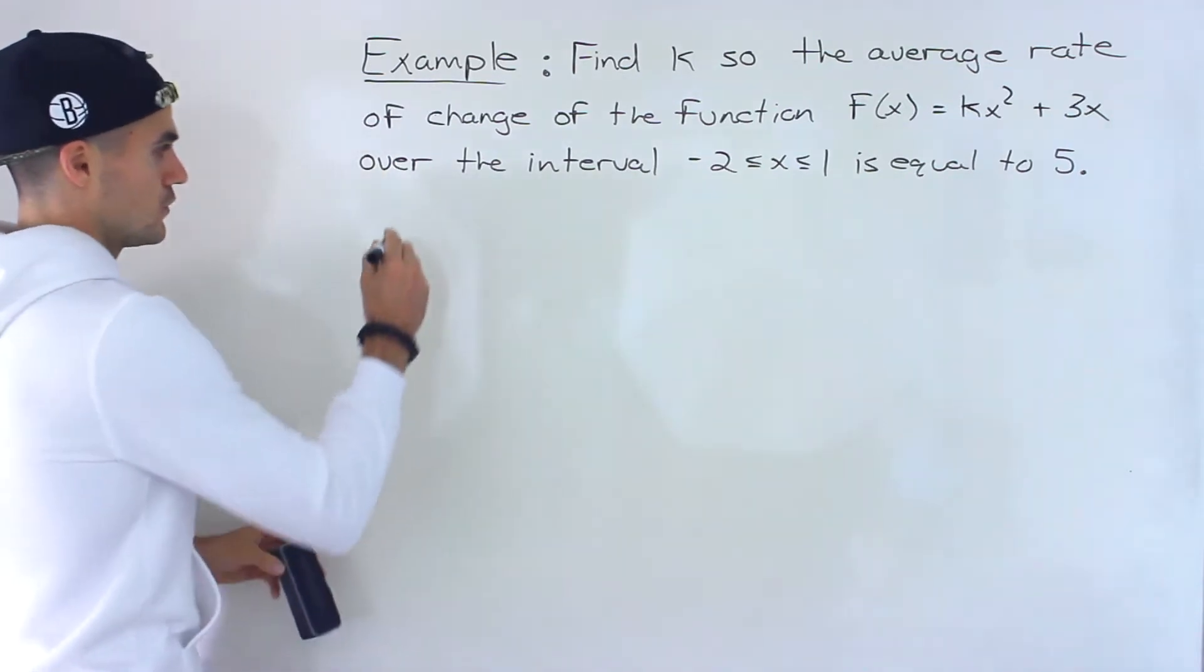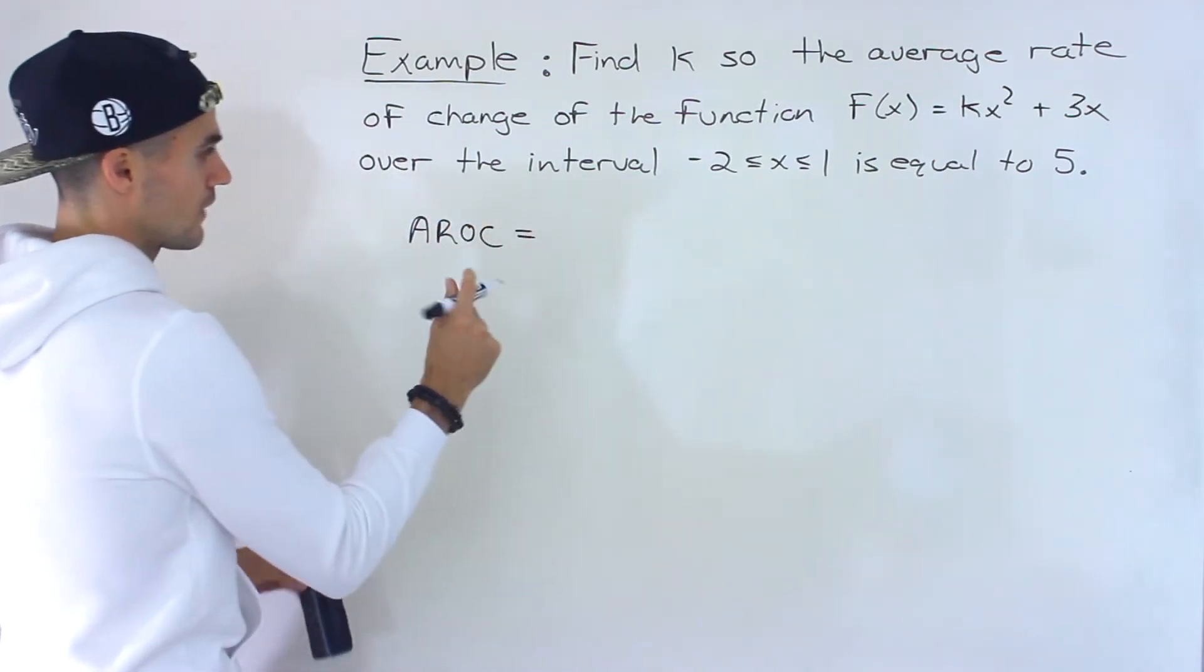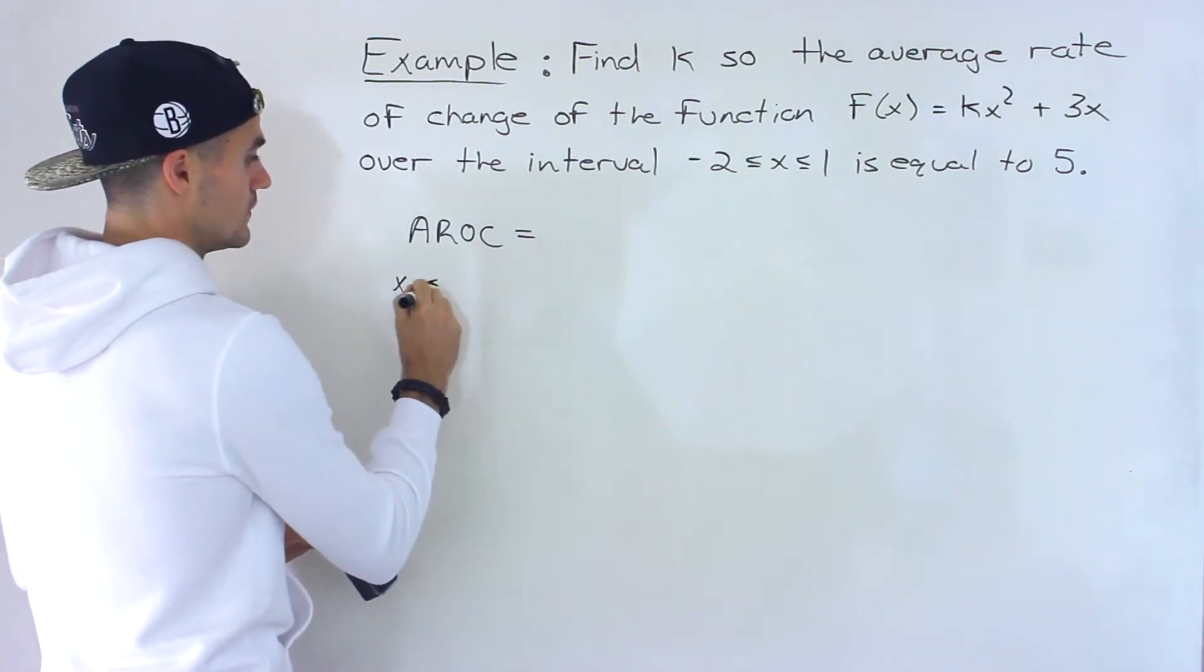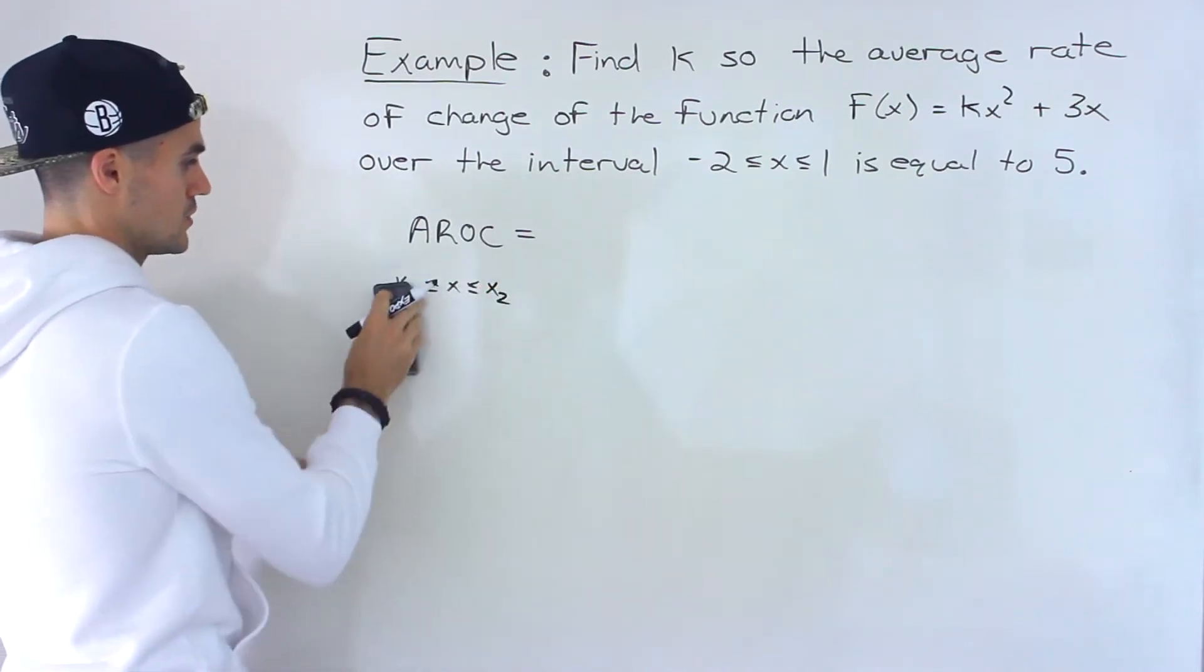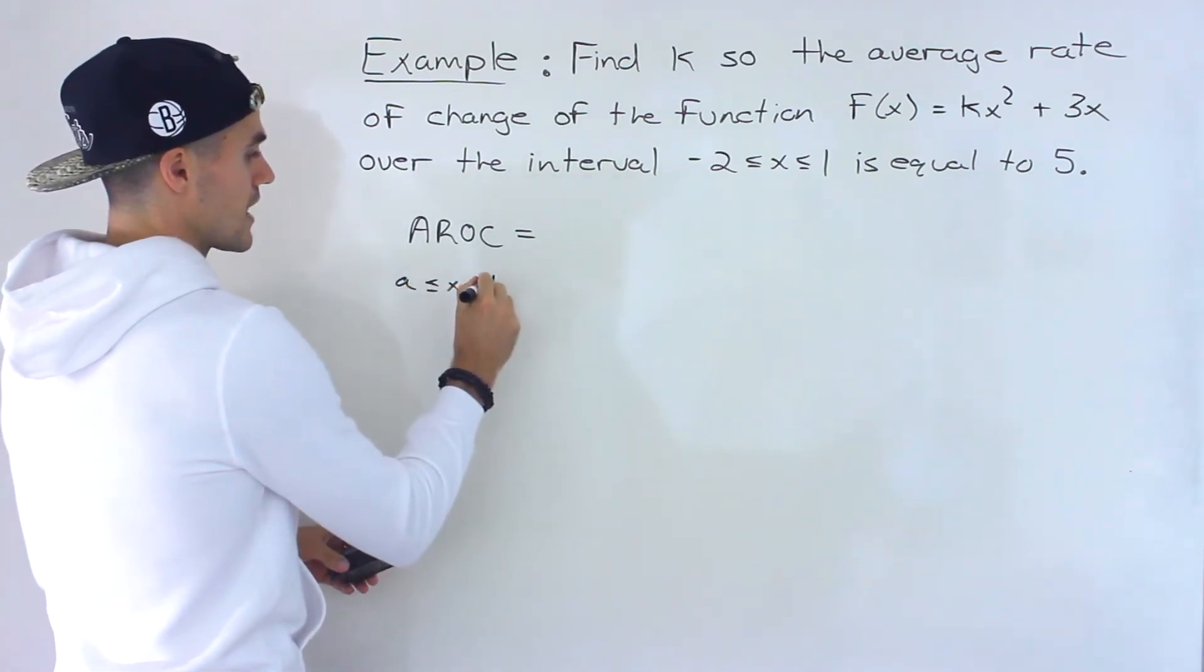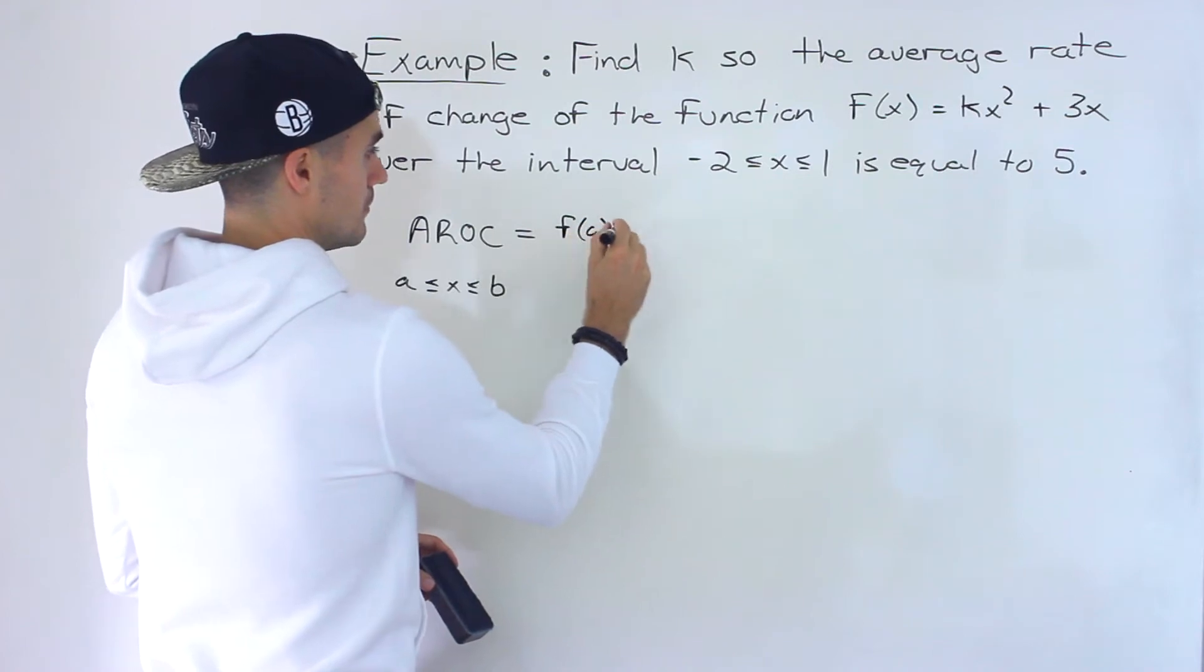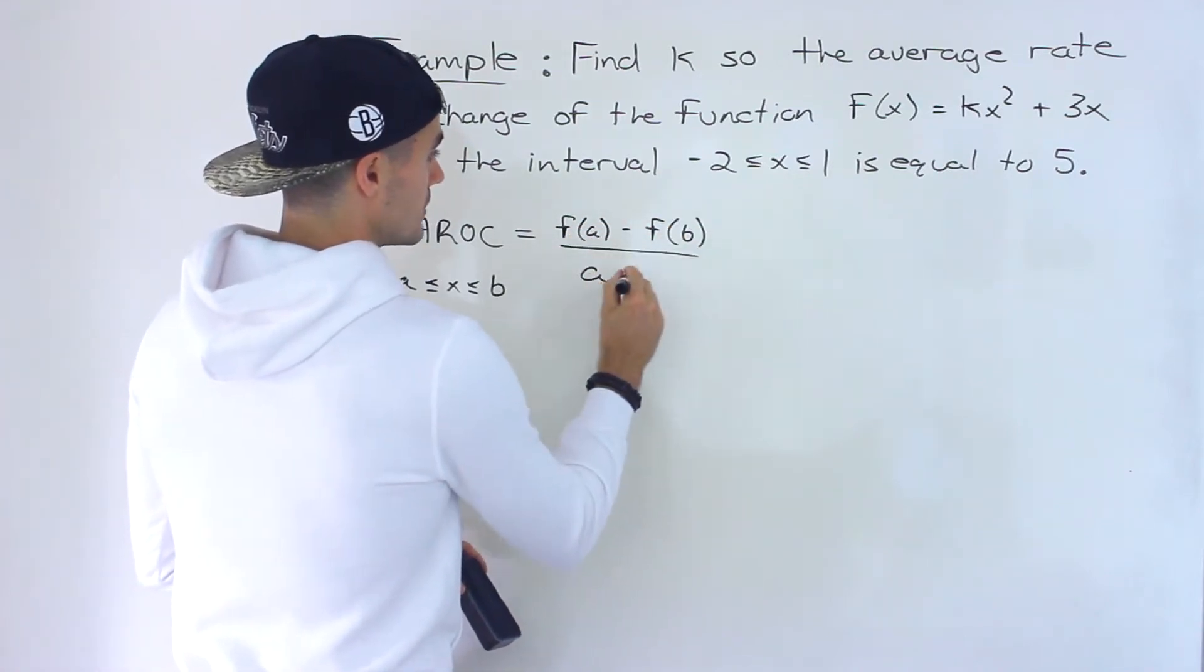So as a quick review, average rate of change, what's the formula for that? Average rate of change is always going to be between two points. Let's say it's between x values a and b. The formula for that is going to be f(a) minus f(b) all over a minus b.